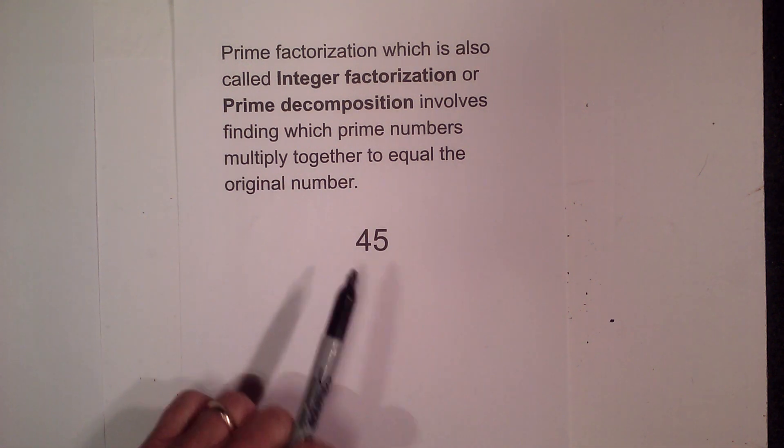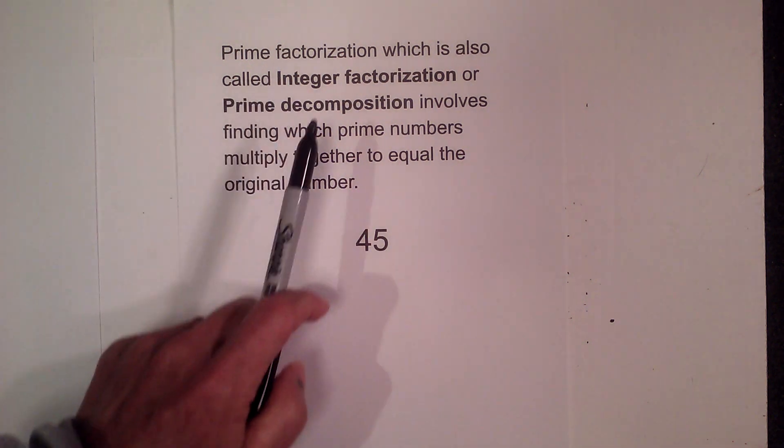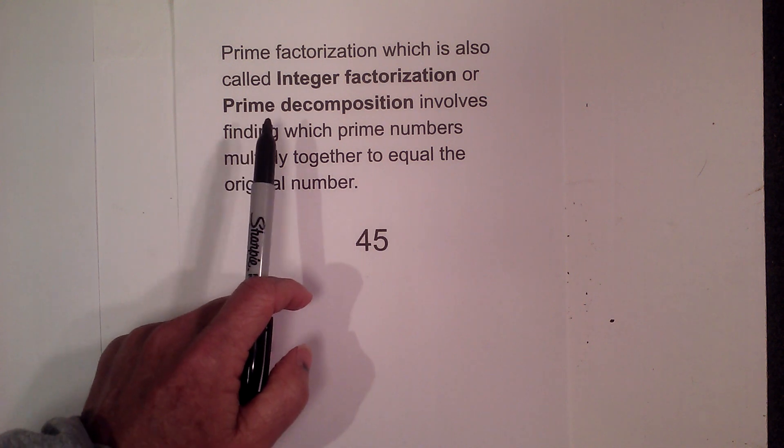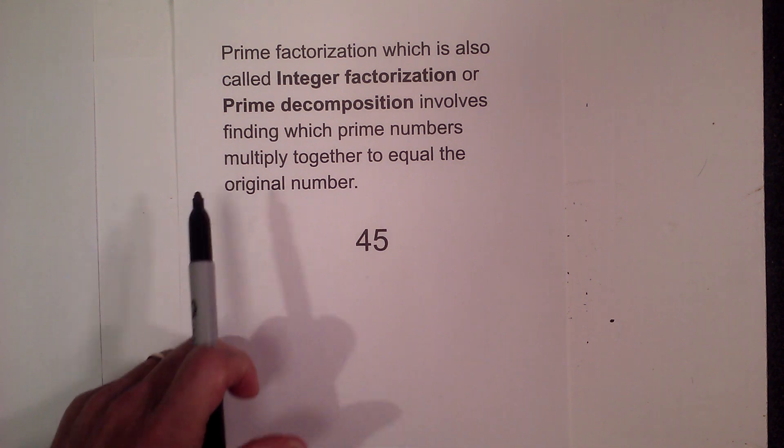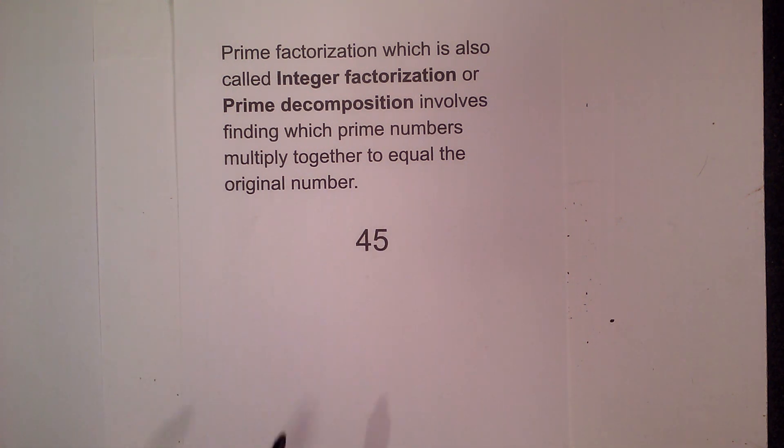The prime factorization of 45 and 75. Prime factorization, which is also called integer factorization or prime decomposition, involves finding which prime numbers multiply together to equal the original number.